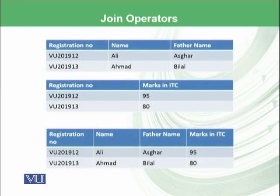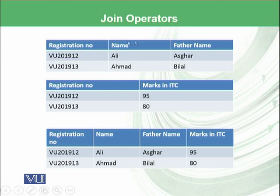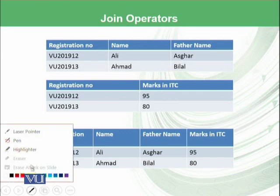Let's have a practical example. We have two relations: one has registration number, name, and father name, and another has registration number and marks in introduction to computing. You can see that this is one file being stored at a university.